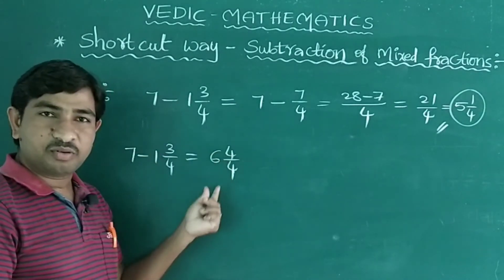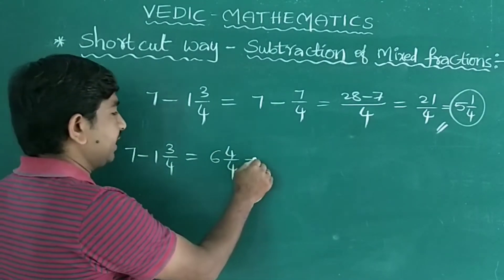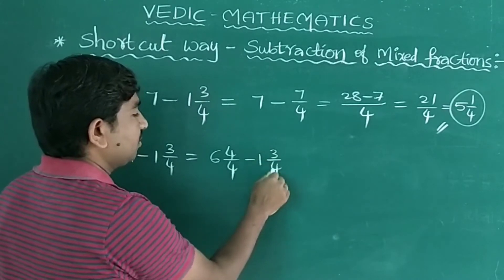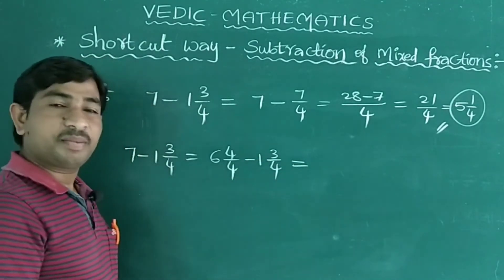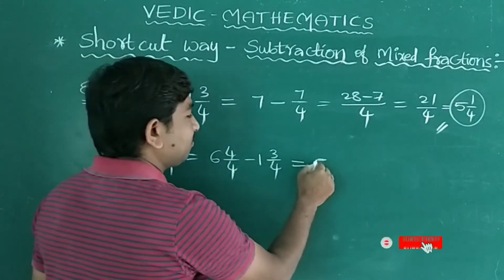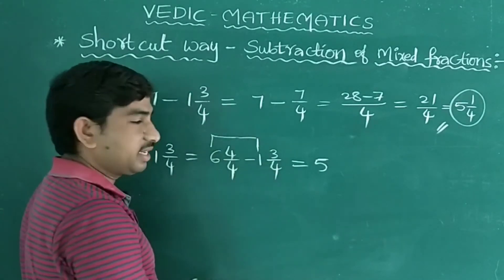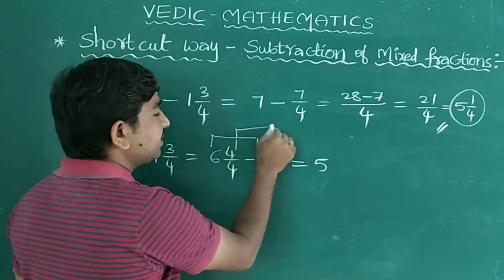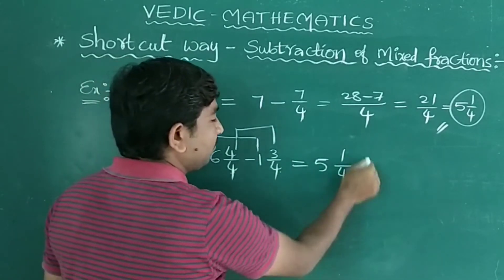28 by 4 means 4 times 7 is 28. So 7 I can rewrite as 6 4/4 minus 1 3/4. Now these two are in the form of mixed fractions. Now the subtraction is very easy. 6 minus 1, you can write 5, and 4 minus 3, you can write as 1, and base denominator 4. Very easy.